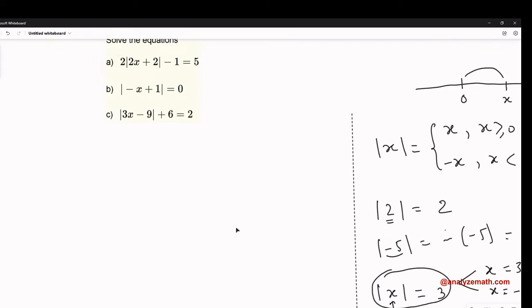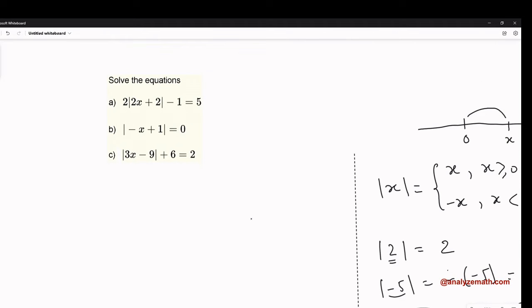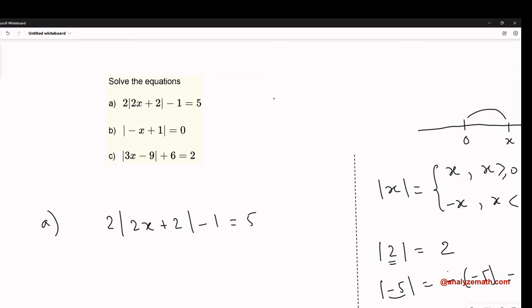Now let's go to our equation in part A and start solving: 2|2x + 2| - 1 = 5. The first step in solving an equation with absolute value is to isolate the absolute value. Let's get rid of the negative 1 by adding 1 to both sides.